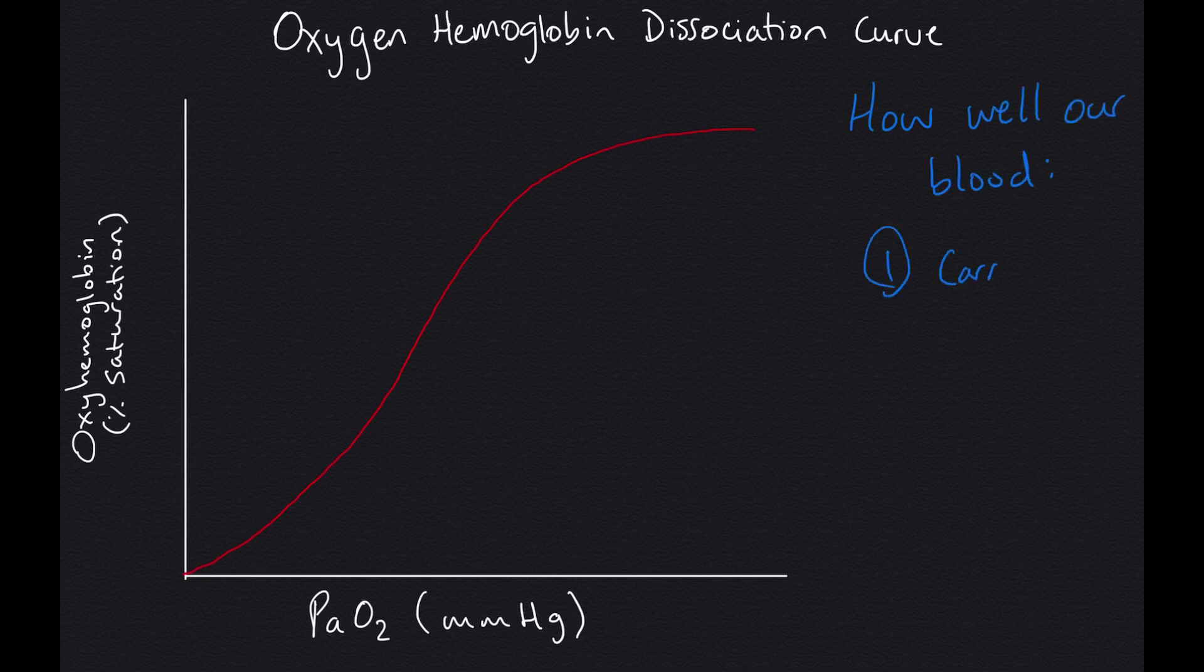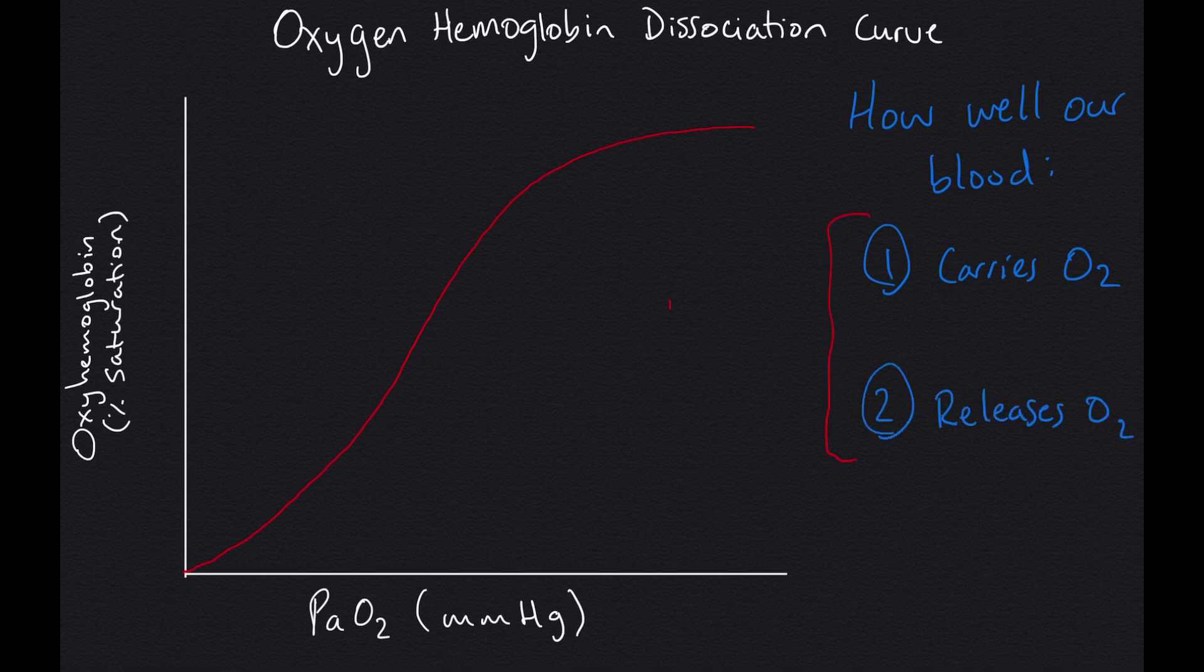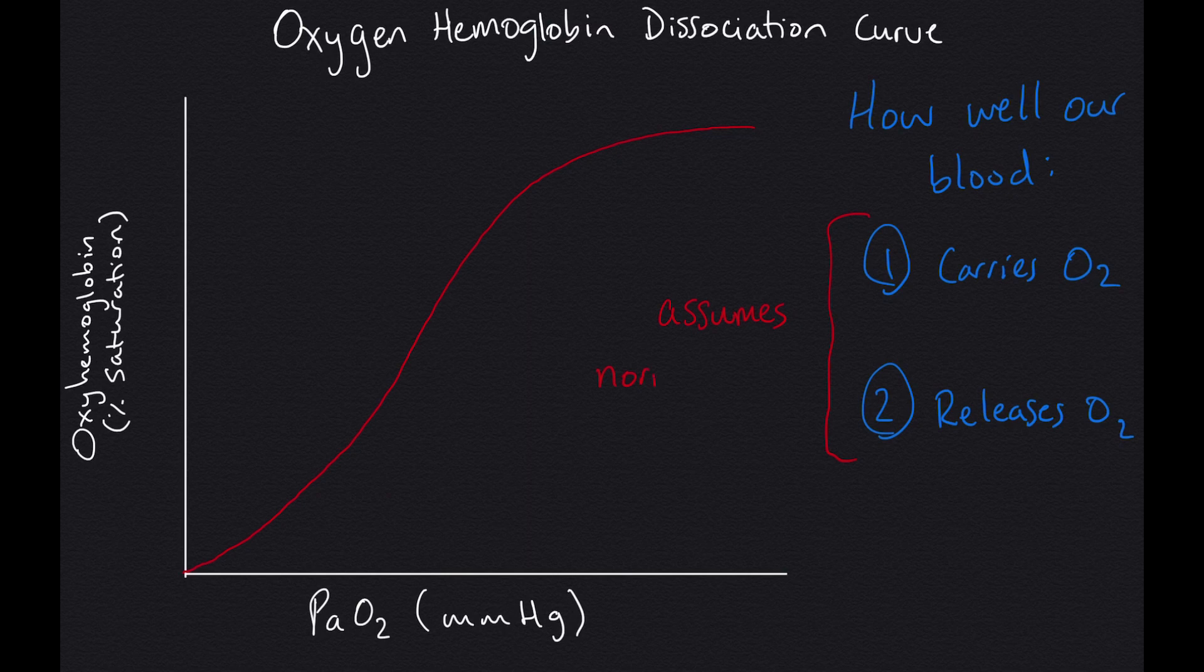The curve actually shows us the point at which oxygen can release or dissociate from hemoglobin to be used by the cells based on a normal body pH and body temp. It's cool stuff, so let's get started.